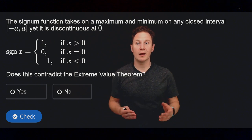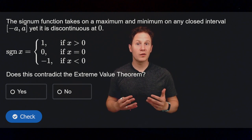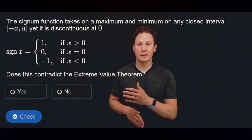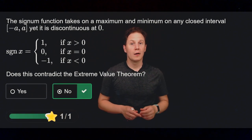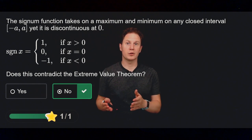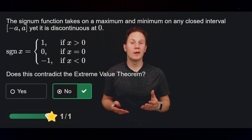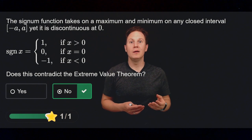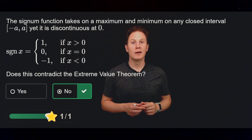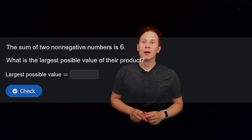Next question: the signum function takes on a maximum and minimum value on any closed interval between negative a and a, with a being a positive number, yet it is discontinuous at zero. Does this contradict the Extreme Value Theorem? No, it doesn't. The theorem says that once you have a continuous function on a closed interval, it will take on maximum and minimum values — it doesn't say the converse is true. This discontinuous function is a perfect example showing that.